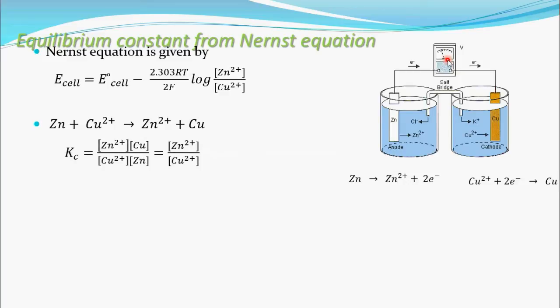And equilibrium constant can be given as for this reaction. K_c equal to concentration of the product divided by concentration of the reactants. See what are the products? Concentration of Zn²⁺ ions into concentration of Cu divided by concentration of Cu²⁺ ions and concentration of zinc.